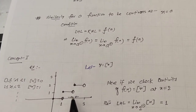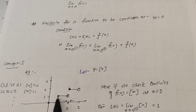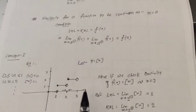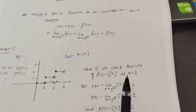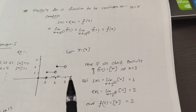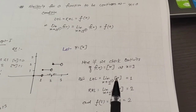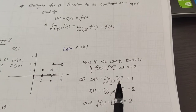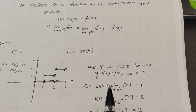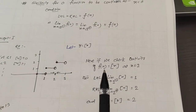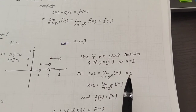So it is a discontinuous graph, also known as a piecewise graph. Let us check the continuity at x equals to 2. The left-hand limit means x tends to 2 minus — something less than 2, for example 1.9999. The greatest integer value of 1.9999 is 1.